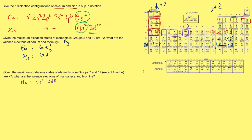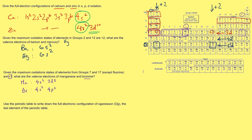For bromine, the 3d subshell is full, so our valence electrons — which have to add up to seven because we have a maximum oxidation state of plus seven — are 4s2. The 3d is full, but our 4p subshell has one, two, three, four, five electrons — so 4p5. That's a partially filled subshell, and those seven electrons together are our seven valence electrons for bromine.